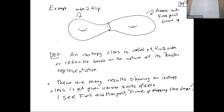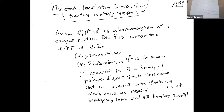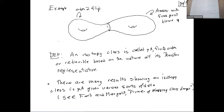Any isotopy class — this is like a prime decomposition theorem, where pseudo-Anosovs are the primes and reducible maps are the composites. There are lots of algebraic and geometric results for deciding isotopy classes, and there are special cases worth examining.